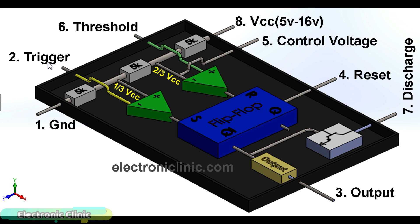The output Q-bar is connected with the base of the NPN transistor and also with the output stage, which has an inverter that converts 1 into 0 and 0 into 1. So if the output of the flip-flop is 1, then the output of the 555 timer IC will be low. And if the output of the flip-flop is 0, then the output of the 555 timer IC will be high. Moreover, you can reset the flip-flop using the 555 timer IC external reset pin.